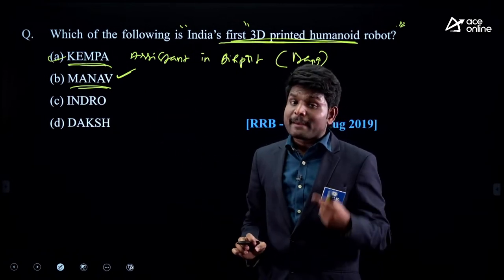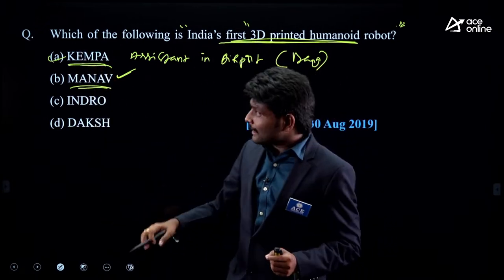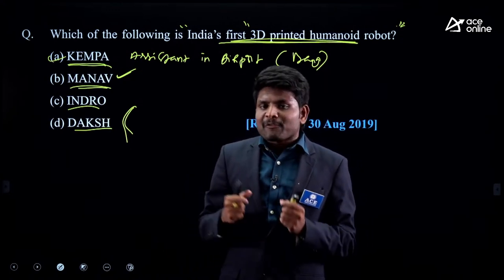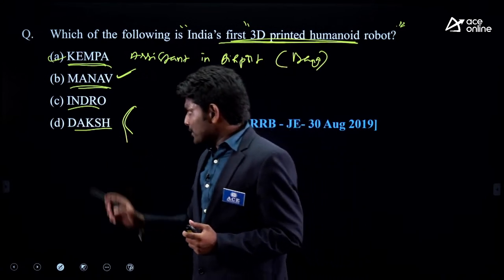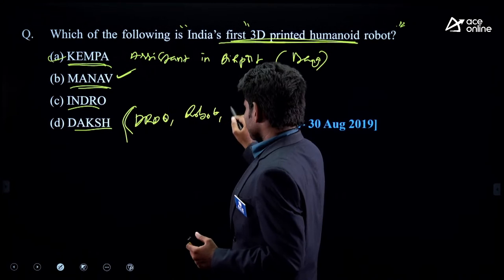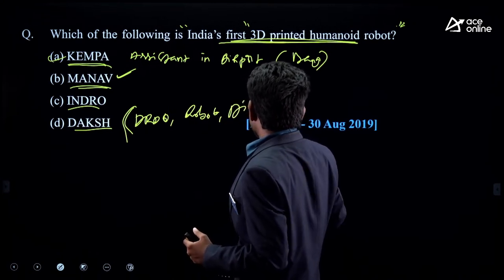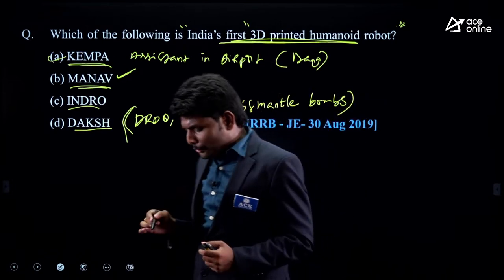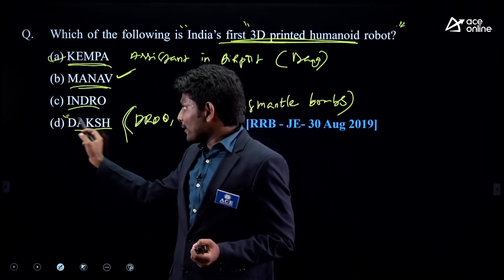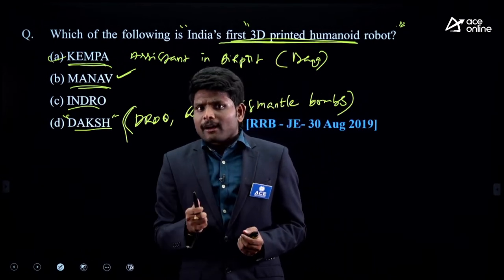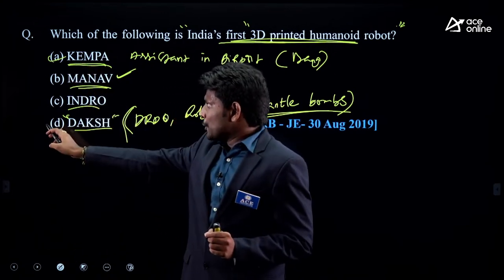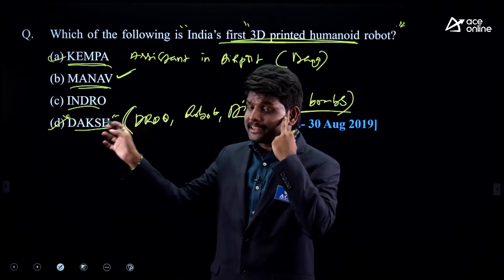Daksh is a robot created by DRDO that can dismantle bombs. The advantage: if a human tries to dismantle a bomb and it explodes, we lose a valuable human life. If you use a robot instead, you can save the human life. So if they ask: 'What is the robot that can dismantle bombs?' — choose Daksh, not Kempa or Manu.